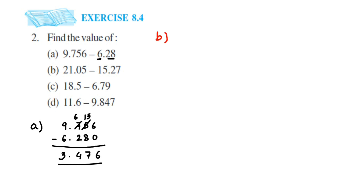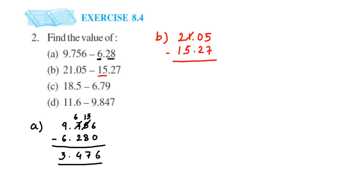The next question is 21.05 minus 15.27. Place the decimal point one below the other — that's called lining up. On the left side we have 15, so write down 5 and 1. On the right side we have 27, so write 27. Now 5 minus 7 — we cannot do it. We want to take a borrow from 0, but 0 has no value, so it's going to take a borrow from 1.